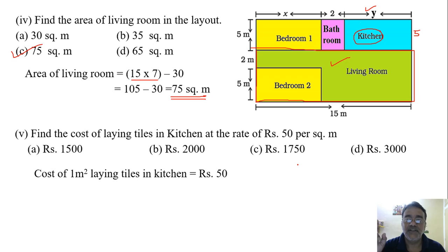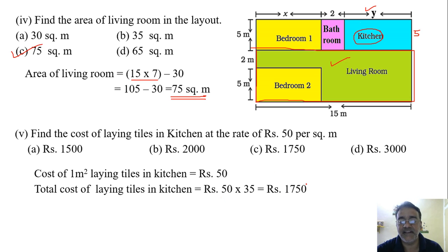So cost of 1 meter square laying tiles in kitchen is rupees 50. So cost of 35 meter square will be equals to 50 into 35, that is rupees 1750. So this is the total cost for laying tiles in kitchen. Any doubt in this question?